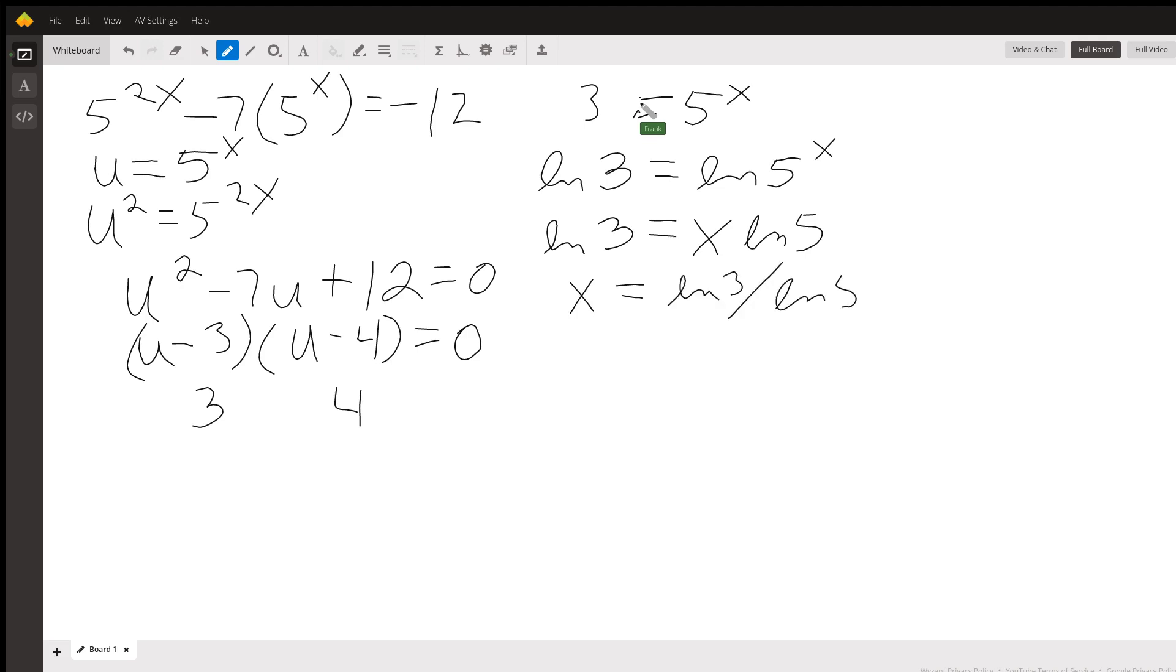Again, you could have used any natural logs you want. I will do this on a calculator. Log of 3 divided by log of 5, and it comes out to approximately 0.683.